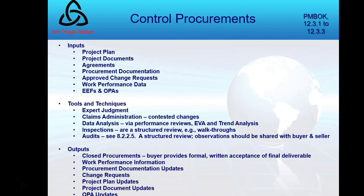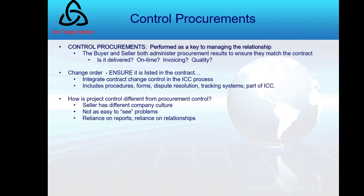Work performance information is regularly an output in control processes, as are change requests, plan updates, and document updates. Organizational process assets that can be updated as a result of control procurement include the pre-qualified seller list, lessons learned based on this contract, the strategy, and the contract vehicle — fixed price, cost reimbursable, or time and material.